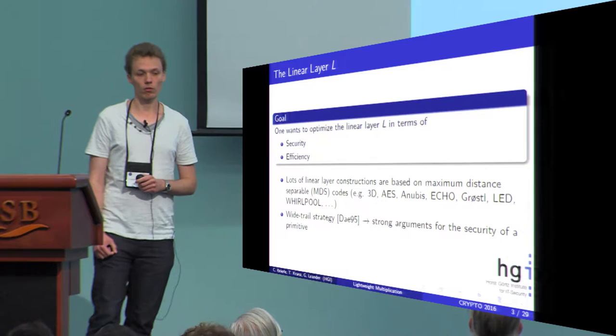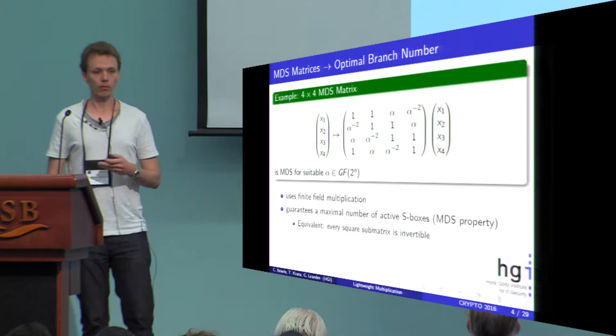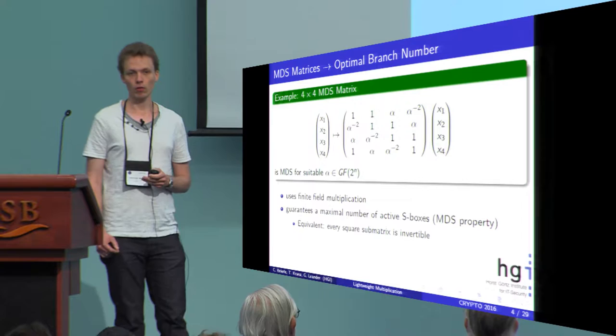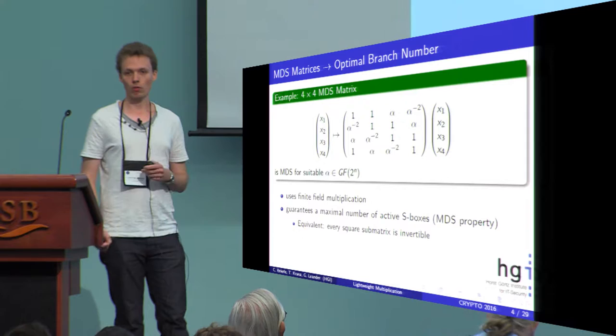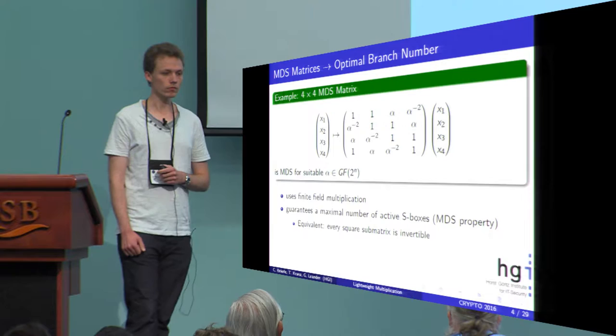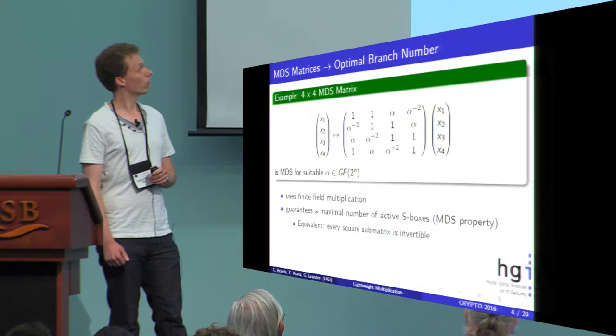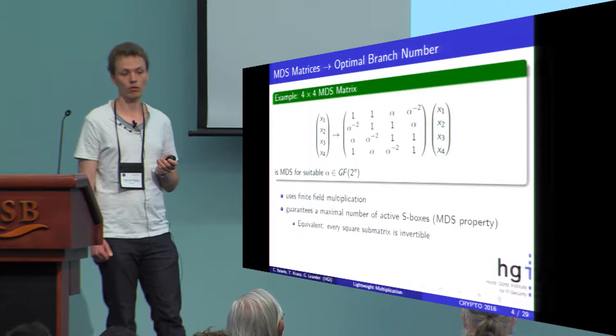Let me give an example. What does MDS matrix mean? It means that it reaches an optimal branch number over two consecutive rounds, which means that we can guarantee an optimal number of active S-boxes for differential and linear attacks. If you are not familiar with these attacks, all you have to remember is that an equivalent formulation is that every square submatrix has to be non-singular, and then the matrix will be MDS.